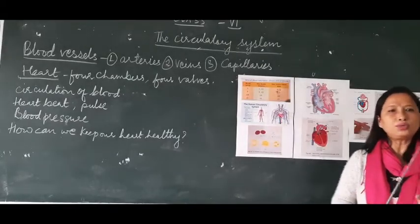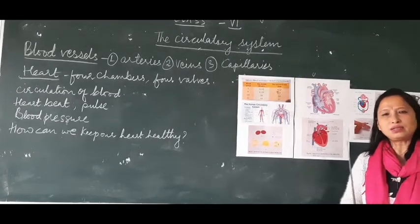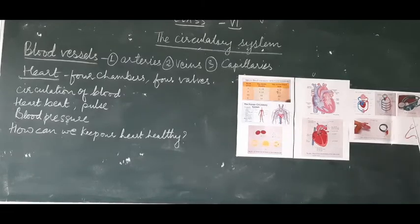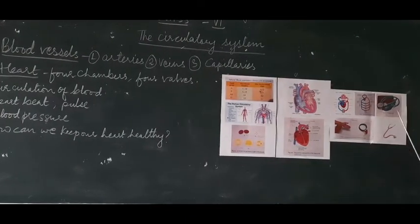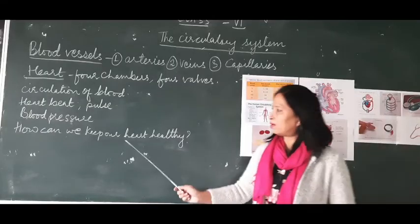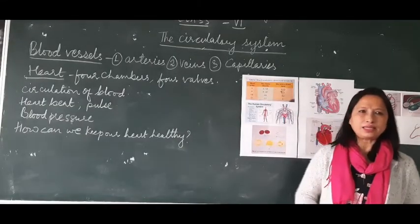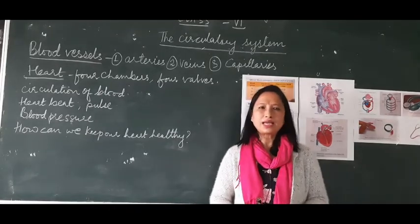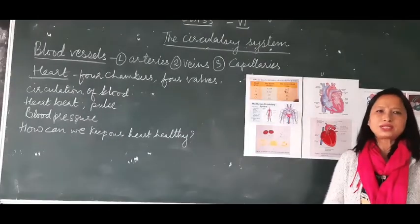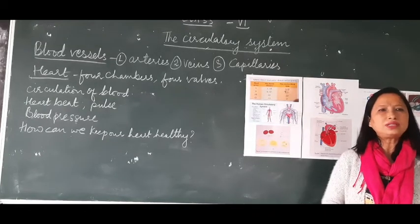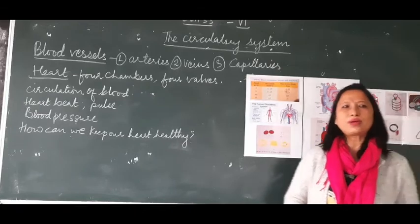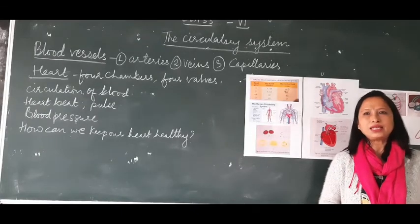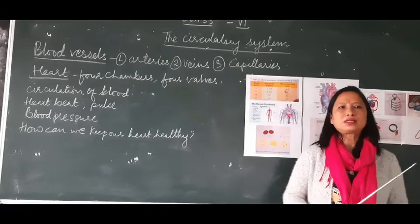The pressure exerted on the walls of blood vessels by the circulating blood is called blood pressure, and it is measured by an instrument called a sphygmomanometer. We can keep our heart healthy by doing aerobic exercises like playing outdoor games, jogging, cycling, and swimming. Adequate rest and relaxation are also necessary. Smoking, chewing tobacco, and drinking alcohol can harm the heart and lead to high blood pressure and other heart problems.